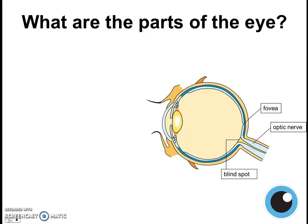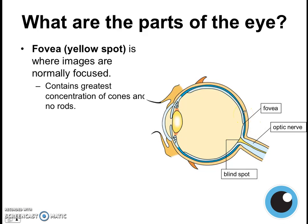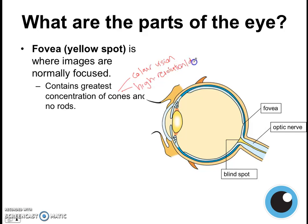First, we need to be aware of some of the structures found on our retina. If you take a look at the retina, you'll see that there's a depression here called the fovea. The fovea, which is also called the yellow spot, is where images are normally focused at the highest focus, the highest detail. It contains the greatest concentration of cones, which allow for colour vision, and because there's a very great concentration of cones, it allows us to see things at a very high resolution or very high detail.